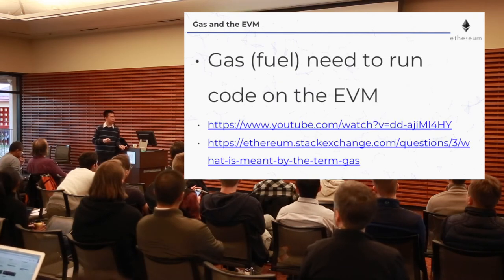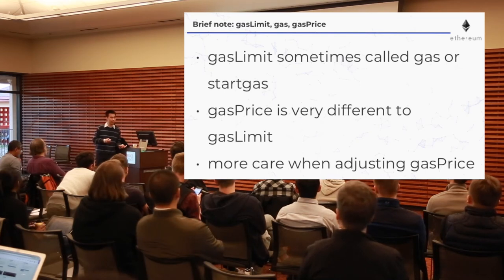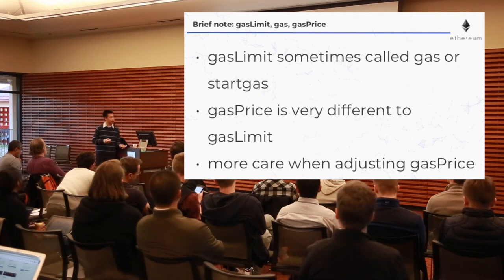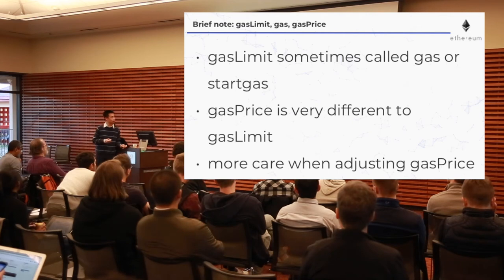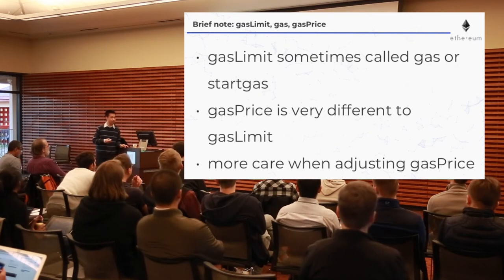To run code in the EVM, you need fuel — this is gas. It's a big topic, but briefly: there's a confusing set of similar-sounding terms. The gas limit is sometimes called 'gas' or 'start gas' in documentation — if you see those, that's the gas limit. The gas price is very different from the gas limit — adjusting the gas price is the one that will generally lead to more money spent.